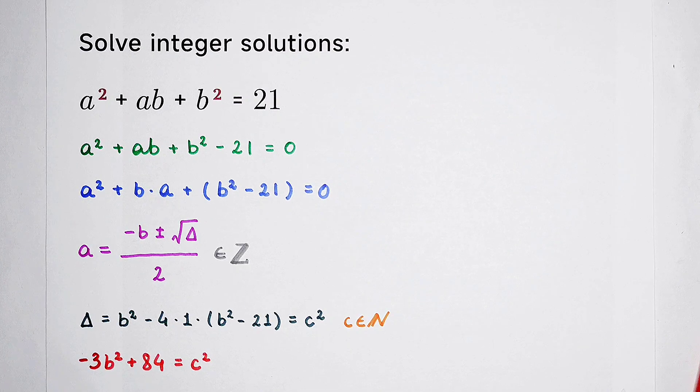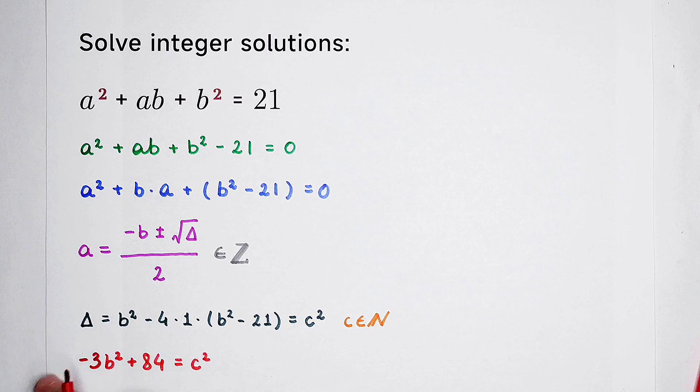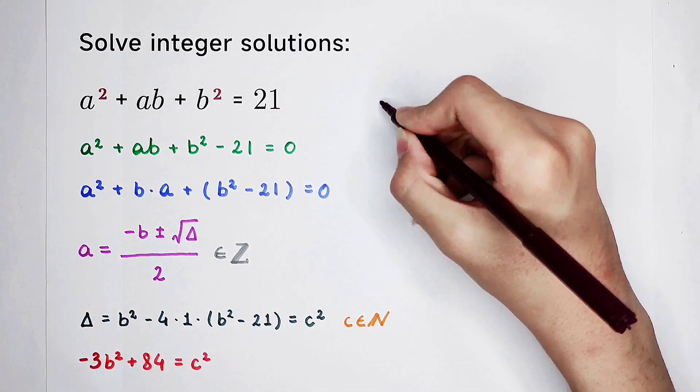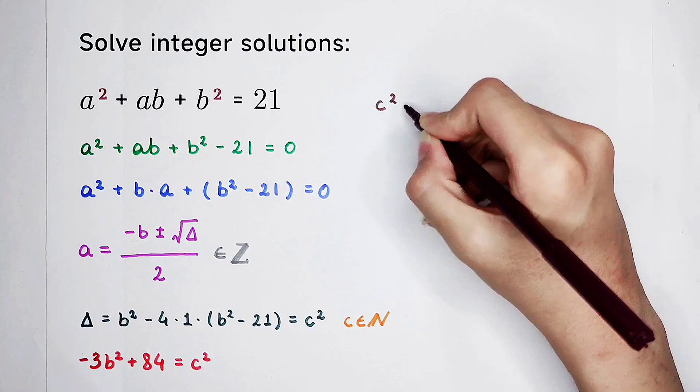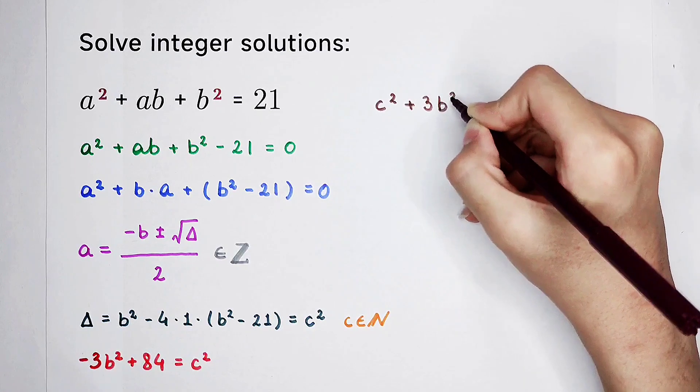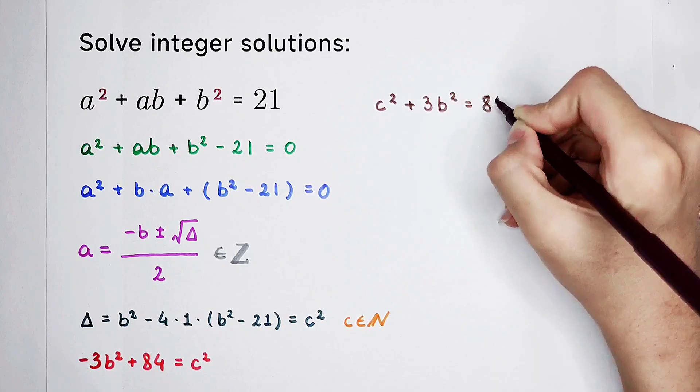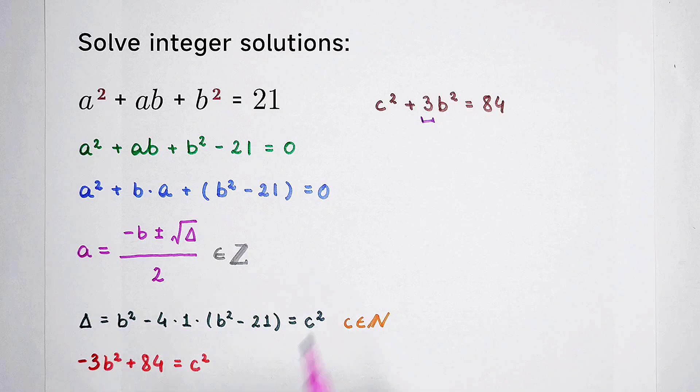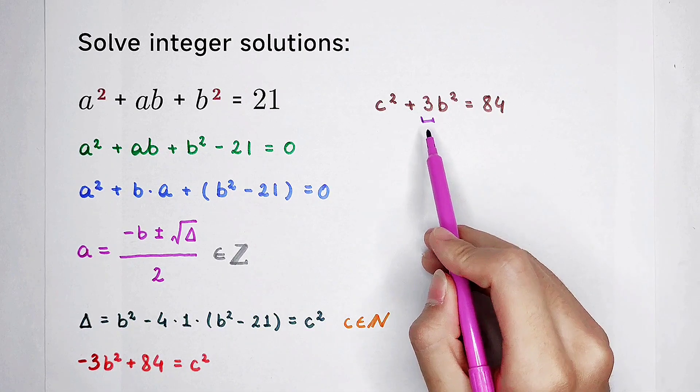Really nice. We got this equation. How should we solve it? Now, c squared plus 3b squared. It is equal to 84. And we can also find out that the coefficient of b squared is 3.